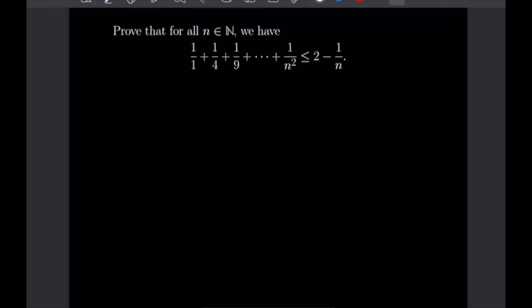This next example is also a proof by induction. We want to prove that for all natural numbers n the following inequality holds: 1 over 1 plus 1 over 4 plus 1 over 9, or in general the sum of 1 over n squared, is less than or equal to 2 minus 1 over n. We'll start with the base case when n is equal to 1. When n equals 1, 1 over n squared is just 1, and 2 minus 1 over n is also 1, so 1 ≤ 1 is true and our base case is confirmed.